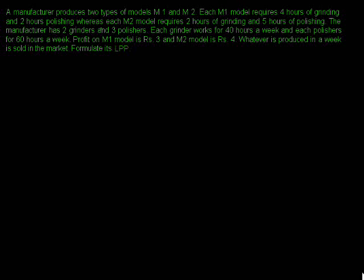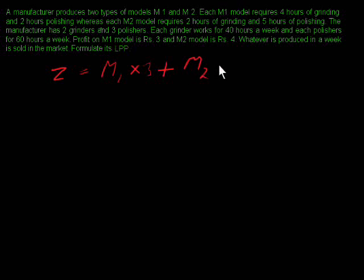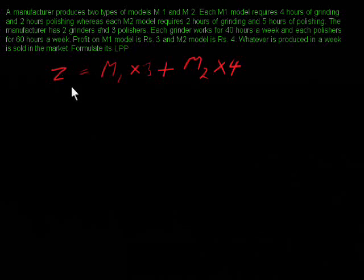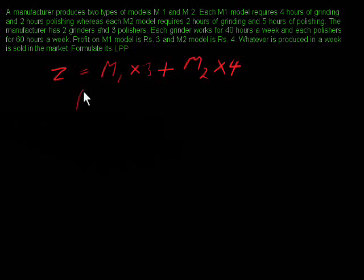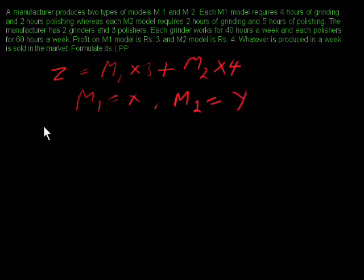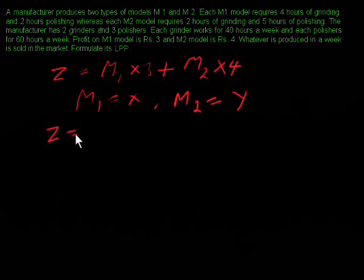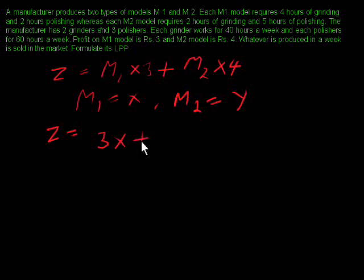To calculate total profit, Z equals model 1's profit times the quantity of model 1, plus model 2's profit times the quantity of model 2. We have to maximize this. Suppose M1 equals X and M2 equals Y, so Z equals 3X plus 4Y.